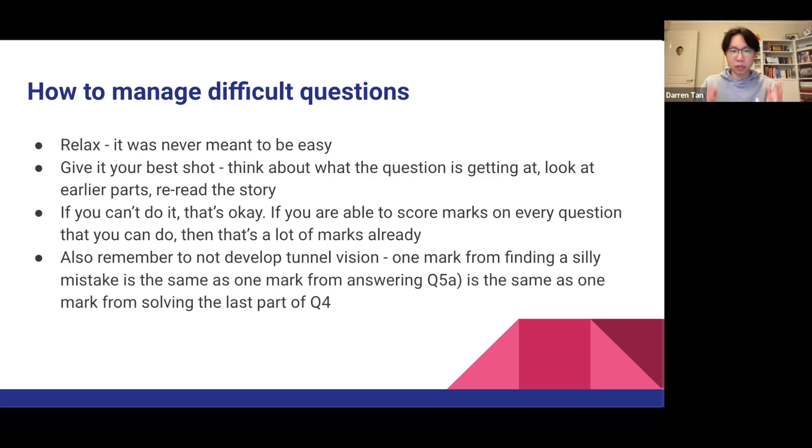Also, don't develop tunnel vision on that question and be so fixated on solving it because you've spent so much time and you can't solve it. Keep in mind that one mark from finding a silly mistake in question 2b is the same as that one mark from question 4f, the last part of the second last question of the exam, which is so difficult, which is also the same as a mark from question 5a. What I mean by that is the early parts of the questions are sometimes easier. So if you're finding the latest parts of a question, so d, e, f quite difficult, just try 5a, try 6b, and you may be able to solve those questions, and that will actually help you gain marks.